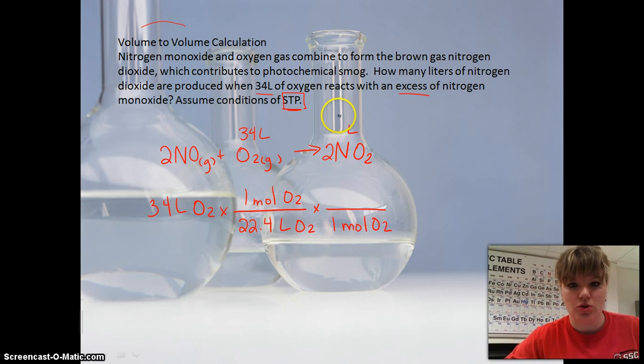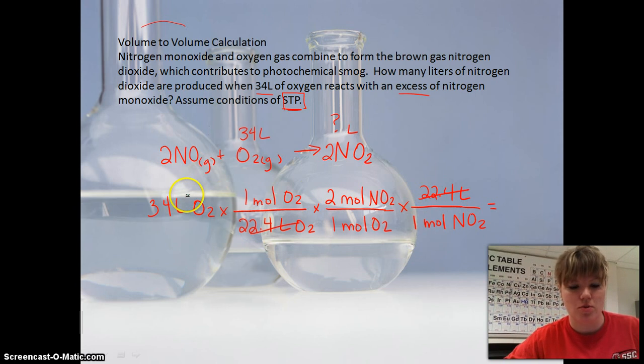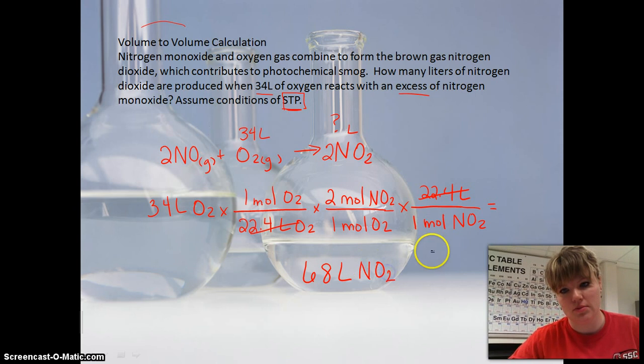So now we know there's just one mole of oxygen. And we are going to NO2, so we need to use this guy, two moles of NO2. And it wants us to go to liters. So now we have to do one more step and do one mole of NO2 and do the 22.4 liters again. So it's almost like these two cancel out because they're on top and bottom. So it's just 34 times 2, and that gives us 68 liters of NO2.